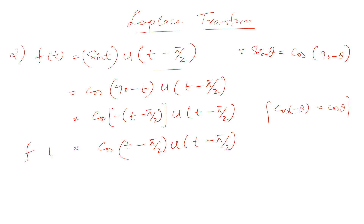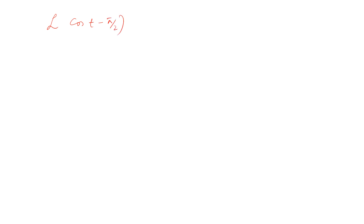So the function of t is in this form. Now we take the Laplace transform of f(t). We know that the Laplace transform of f(t minus a) times u(t minus a) is e to the power negative as times F(s). So we apply this to cos(t minus π/2) multiplied by u(t minus π/2).